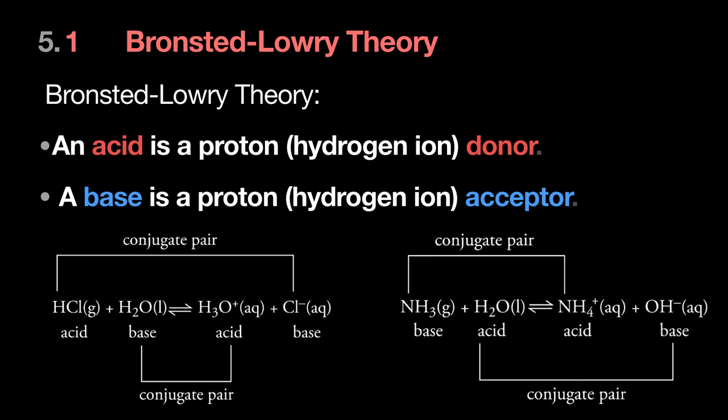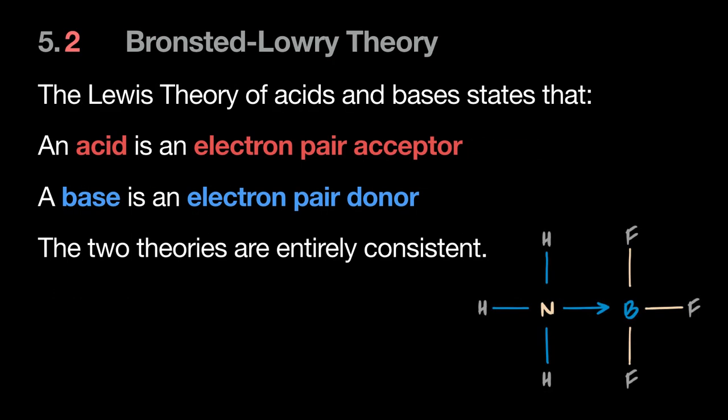H₃O⁺ is the conjugate acid of H₂O because in the backward reaction H₃O⁺ gives up an H⁺ to Cl⁻ to become HCl. Ammonia is a base because it accepts an H⁺ from water to become NH₄⁺, and water loses an H⁺ to become OH⁻. So water can act as both an acid and a base in this definition.